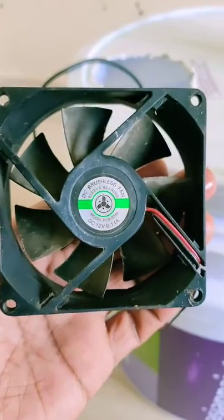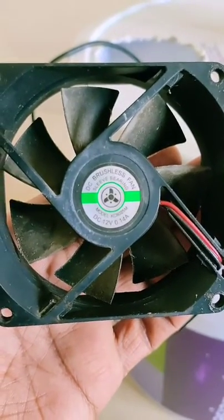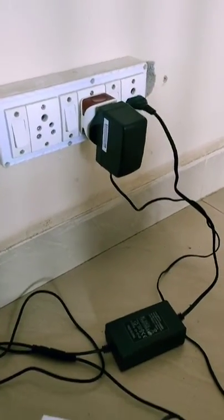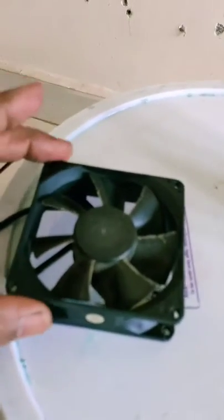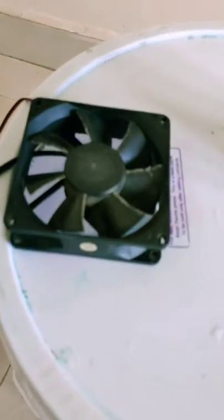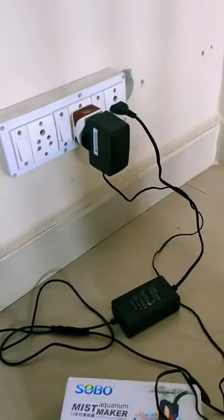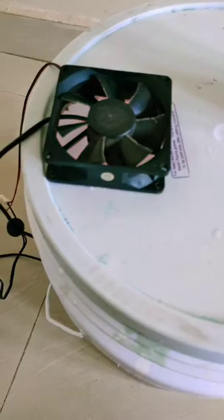This is the 12 volts computer fan, so you have to connect with the power adapter. So I'm already connected this, so I'm just placing like this. I have to screw this, I will do that later. So you have to place like this and check the water level, check the power connections and we can switch on the mist maker.